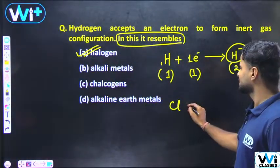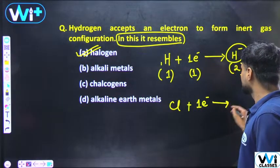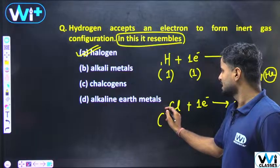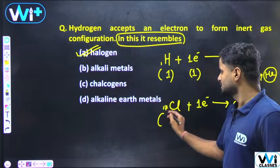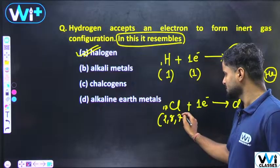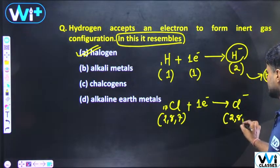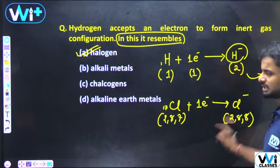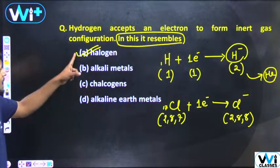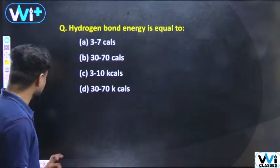It resembles the halogen family. For example, chlorine — chlorine gains an electron. Chlorine atomic number 17, electronic configuration 2,8,7. We need to get the answer to this — we need to do the same thing.